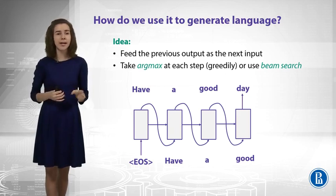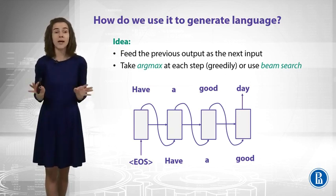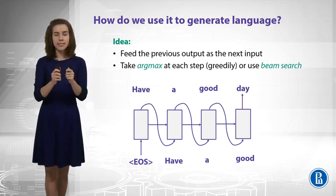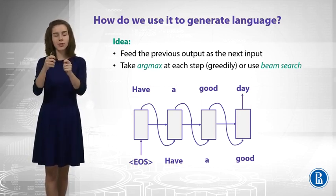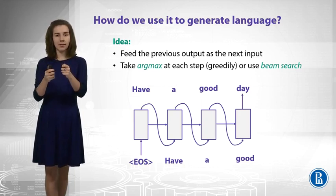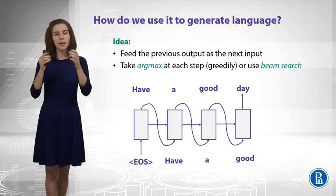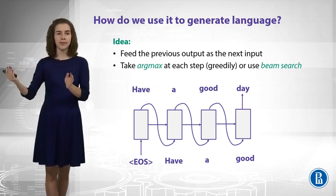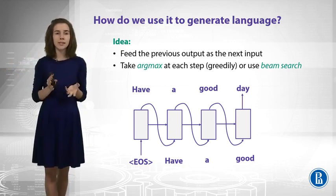Something that can be better than greedy search here is called beam search. Beam search doesn't try to estimate the probabilities of all possible sequences, because that's just not possible — there are too many of them. But beam search tries to keep in mind several sequences. At every step you have, for example, five best sequences with the highest probabilities, and you try to continue them in different ways. You compare the probabilities and stick to the five best sequences again. You go on like this, always keeping five best sequences, and you can result in a sequence which is better than just a greedy argmax approach.